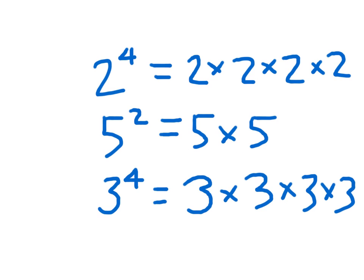On the next one, we're going to go ahead and evaluate this. 5 squared is equal to 25. Let's see if you can do this in your head: 2 times 2 times 2 times 2. 2 times 2 is 4, times 2 again is 8, times 2 again is 16. That means 2 to the 4th is equal to 16. Correct.